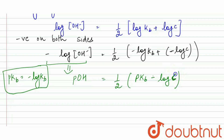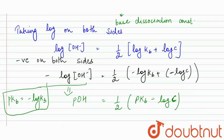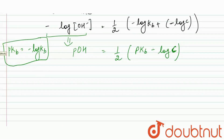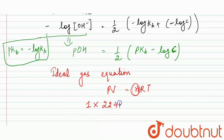We are not given the concentration directly in the question, but we know the values of pressure, volume and temperature. Since RNH₂ is a gas, we use the ideal gas equation PV = nRT to calculate the number of moles. Pressure is 1, volume is 22.41, R is 0.0821, and temperature is 273.